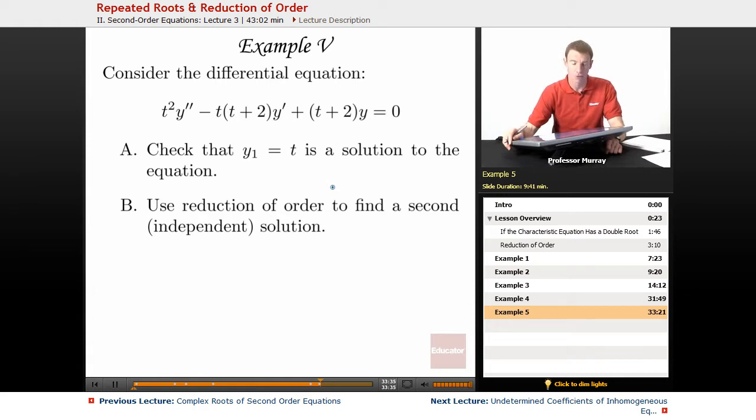For the first step, we're going to check that y1 equals t is a solution to the differential equation. Then we're going to use reduction of order to find a second independent solution.